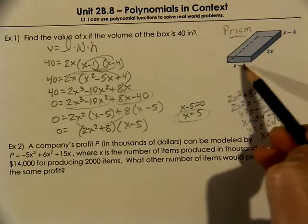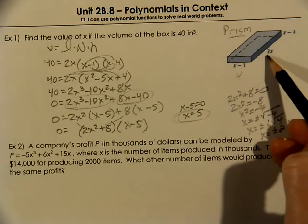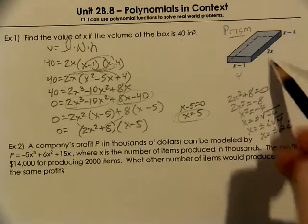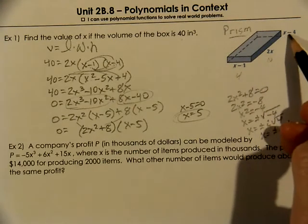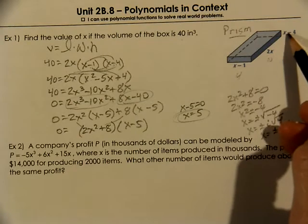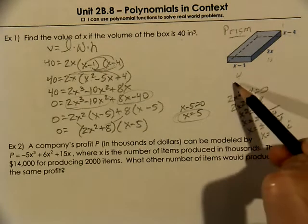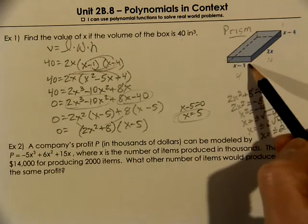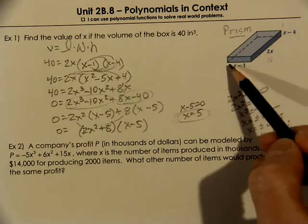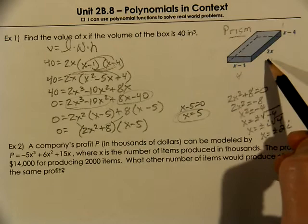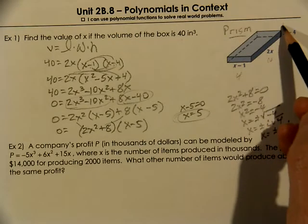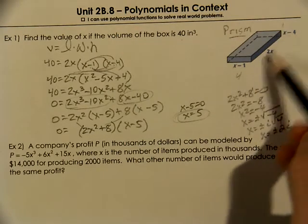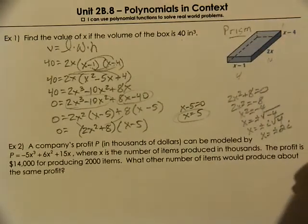5 minus 1 gives us 4. 2 times 5 gives us 10. And 5 minus 4 gives us 1. So if we were going to calculate our volume, we would say length times width, 4 times 10, which is 40, times 1, which is 40. That matched. So that helps.